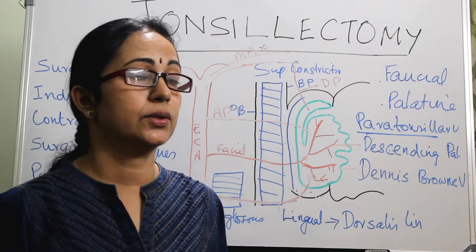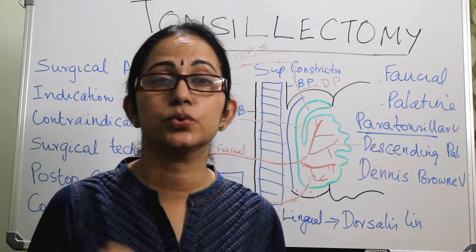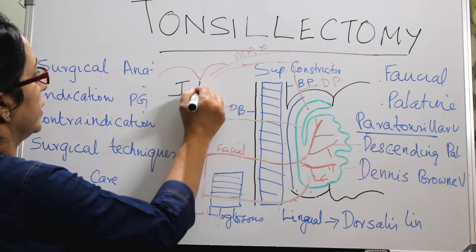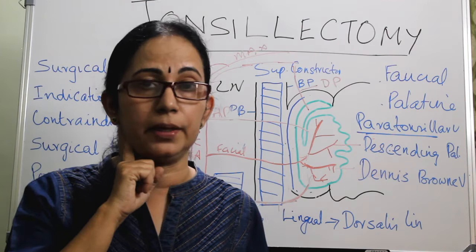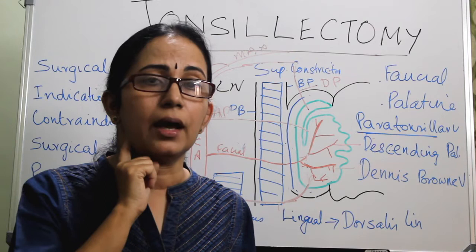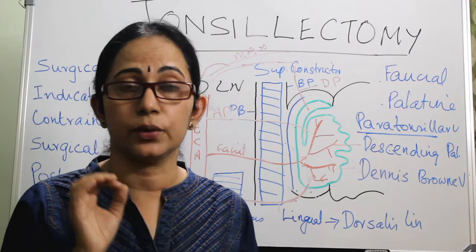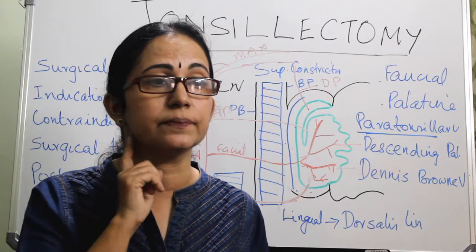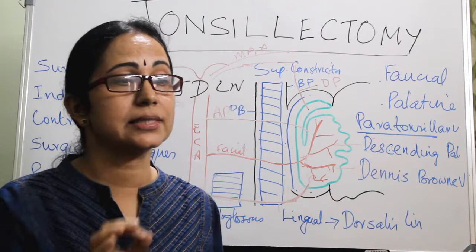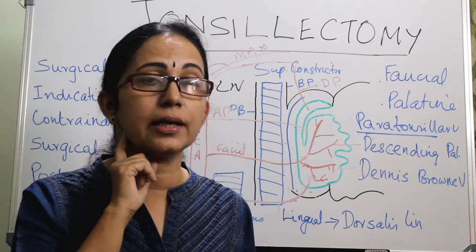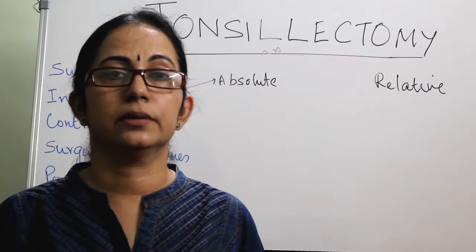Regarding lymphatic drainage: the tonsil has no afferent lymphatics. The tonsillar node is the jugulodigastric lymph node, otherwise called the JD node, situated just below and behind the angle of the mandible. It is enlarged and non-tender in chronic tonsillitis. In acute tonsillitis, this JD node becomes tender — an enlarged and tender jugulodigastric lymph node is one of the classical signs of acute tonsillitis. That concludes the surgical anatomy.